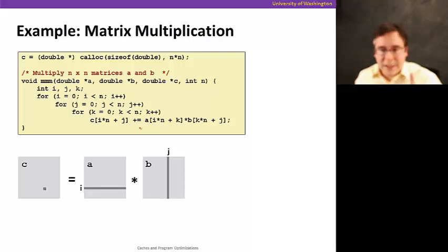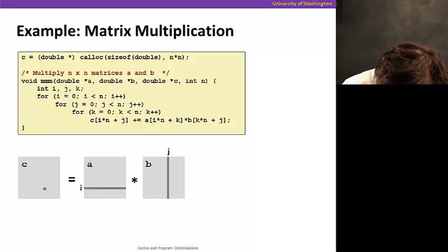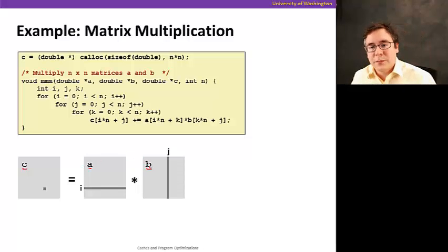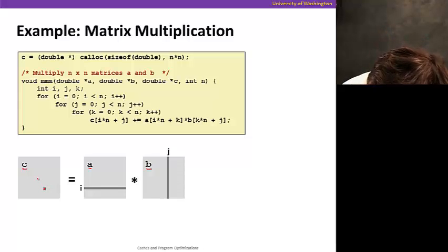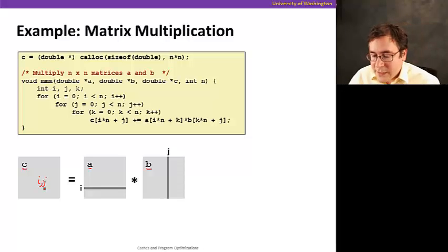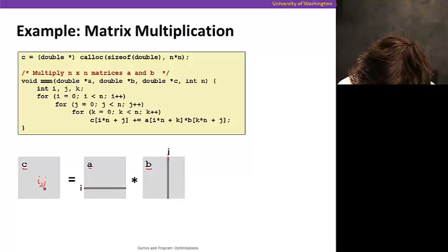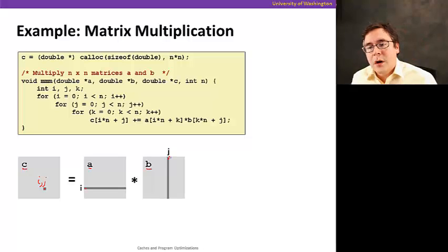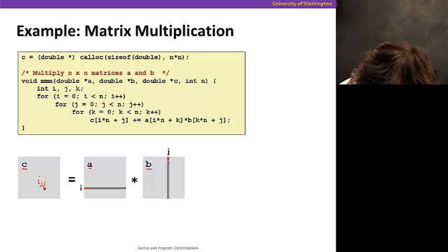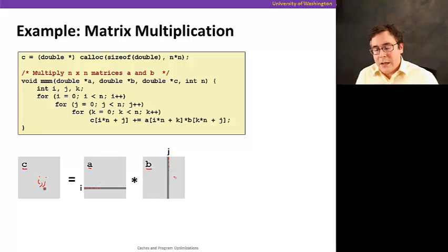Let me give you an example that showcases how important this is — matrix multiplication. In matrix multiplication, suppose I have a matrix C that receives the multiplication of matrix A and matrix B. Element i,j of C equals the i-th row of A dotted with the j-th column of B — multiplying element by element and summing them up.